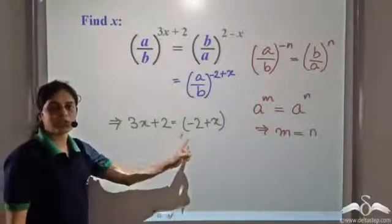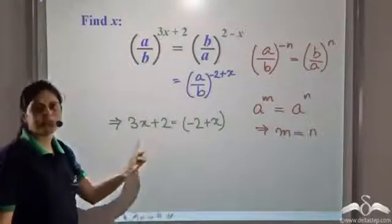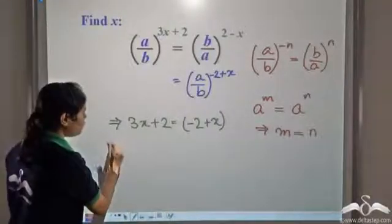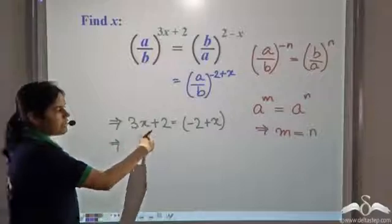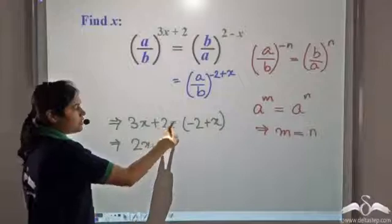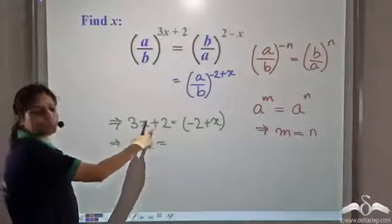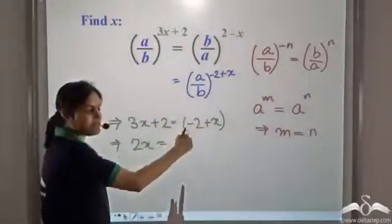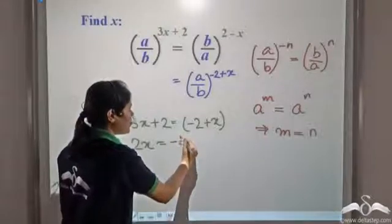Now this is a linear equation in variable x. So let us solve this for x. 3x minus x gives us 2x, negative 2 and this 2 goes to the RHS and becomes negative 2. So we get negative 4.